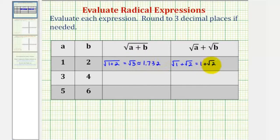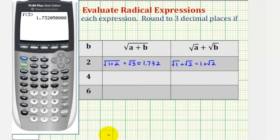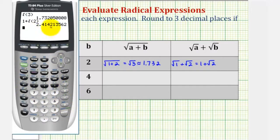And then we have one plus the square root of two. The fourth decimal place is a two, so we round down. This will be approximately two point four one four.